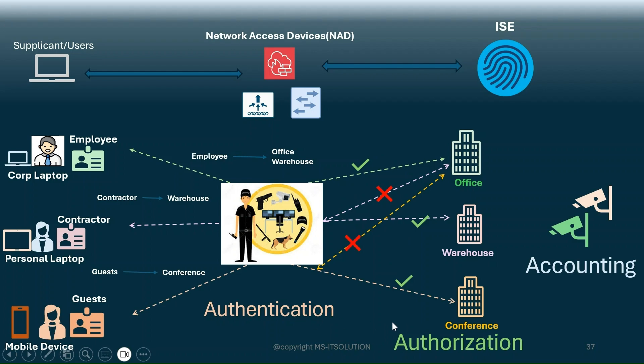All these services — authentication, authorization, and accounting — are provided by Cisco ISE with the help of network access devices. This is AAA service in more detail.